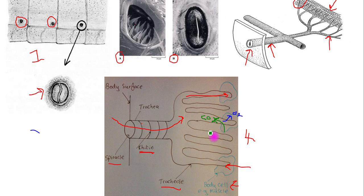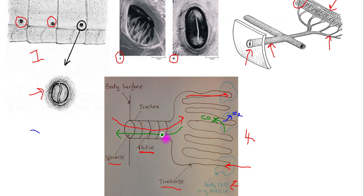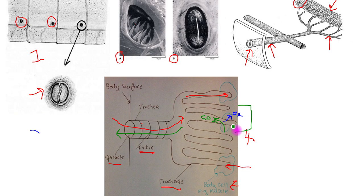Once carbon dioxide starts accumulating in the tracheal system, the spiracle will open and air will be expelled. The insect carries out ventilation movements, which aid the movement of air in and out of the tracheal system — that's what we're going to come on to in a moment. The gas exchange itself, as mentioned, occurs down at the ends of the tracheoles.